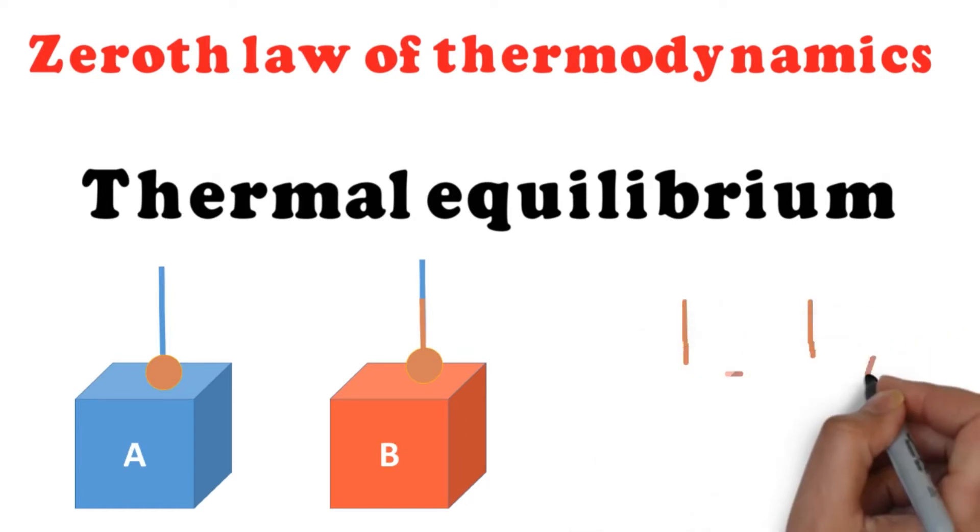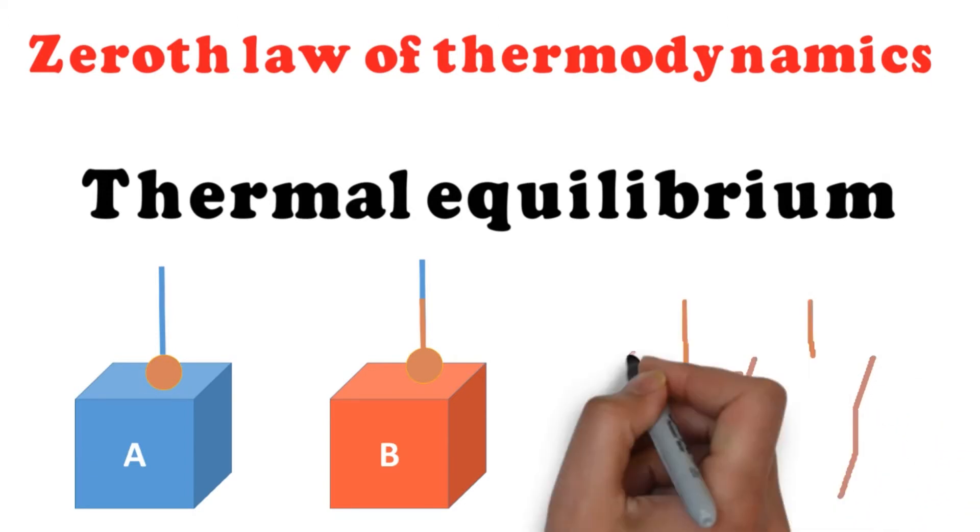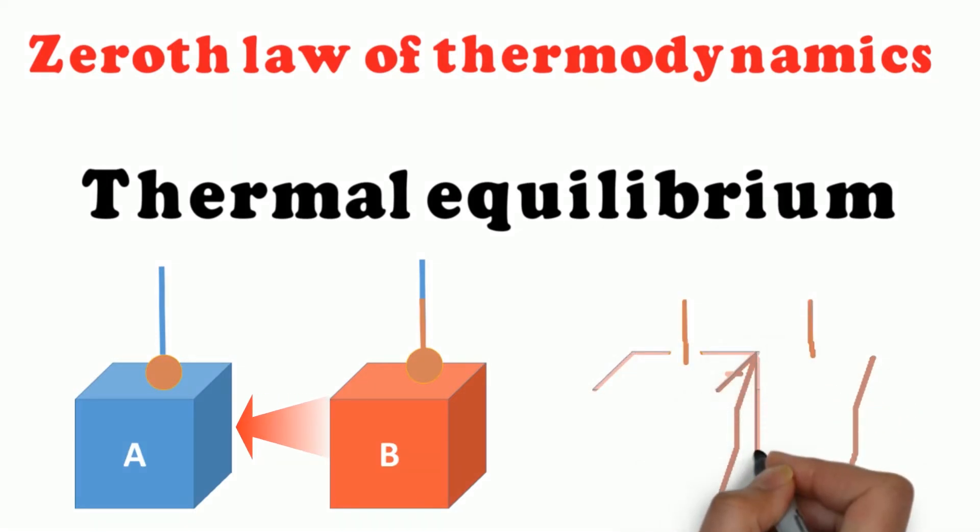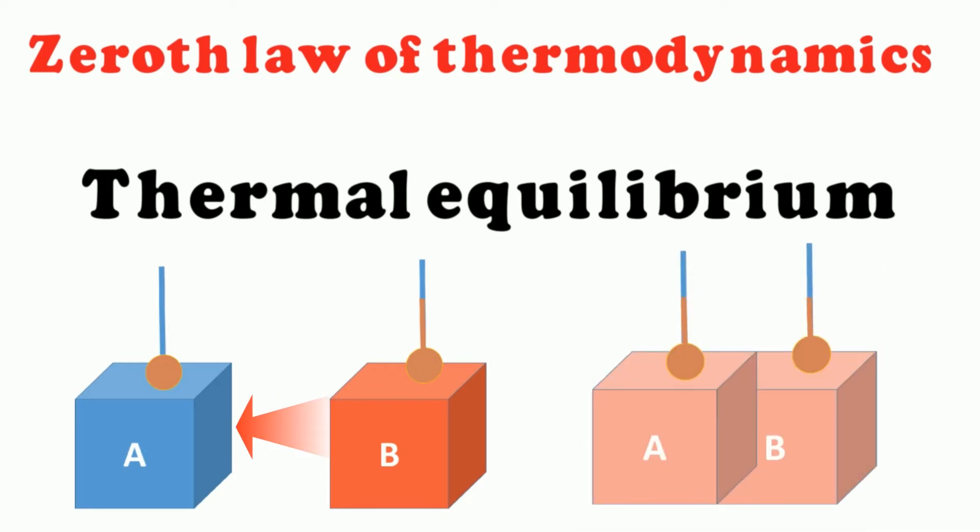Now if we keep these two objects in contact with each other and close to each other, the heat will flow from the hotter body to the cooler body. After some time, they both will have the same temperature. That is known as thermal equilibrium. At that point in equilibrium, the equilibrium state is reached and the heat will not flow anymore.